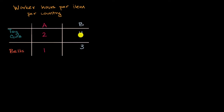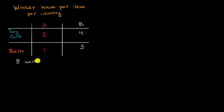In country B, four hours of worker time produces a toy car, and in country B, three hours of worker time produces a belt. So what we're going to do next is convert this into the output world. To do that, we'll just assume that there are eight working hours per day in either country. And so from this, can we construct an output table?